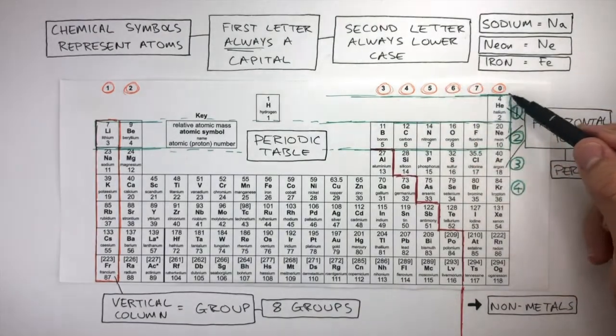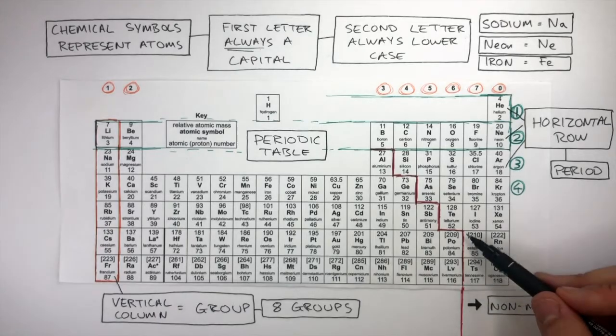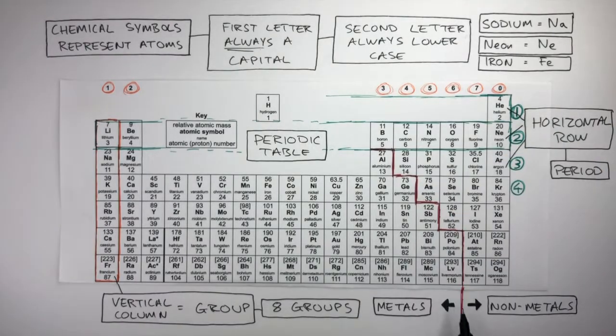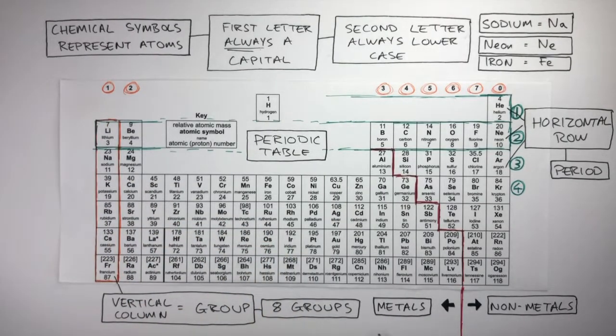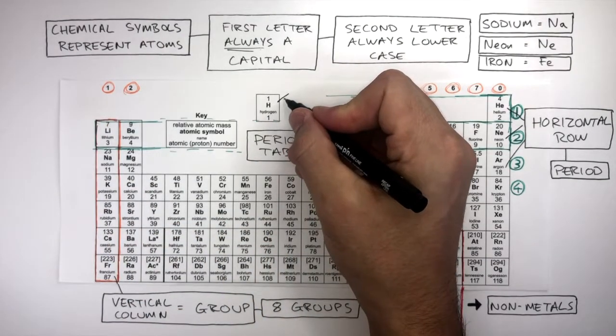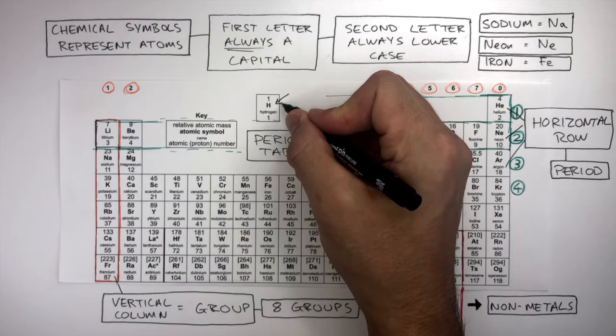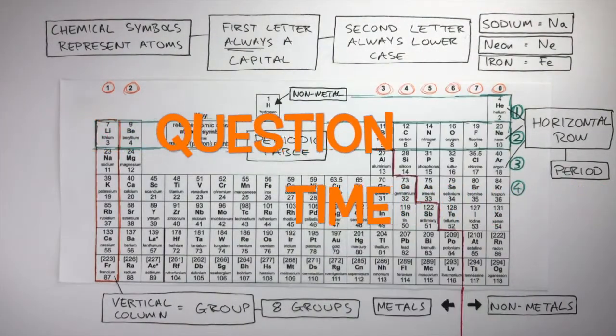So all of these elements to the right of this stepped line are Non-Metals and all of these elements to the left of this stepped line are Metals. Hydrogen doesn't actually belong to a group but you need to know Hydrogen is a Non-Metal. It's Question Time.